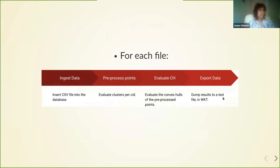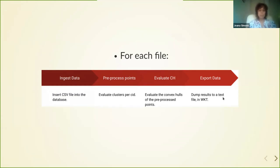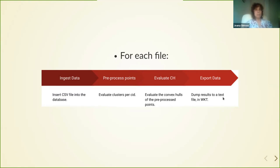To summarize, for each file we did this chain of operations — one step after the other. First we ingest the data into the database. Then we do the pre-processing, which involves calculating the clusters per cell ID. Through this output, we apply the convex hull algorithm. Finally, we dump the results into a text file. We wanted the results to be easily consumed by a GIS, so we used the OGC WKT (well-known text) format, which is interoperable.